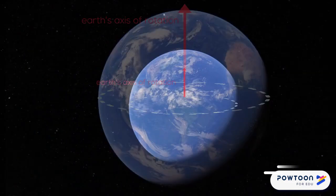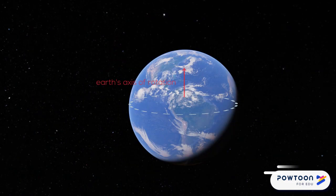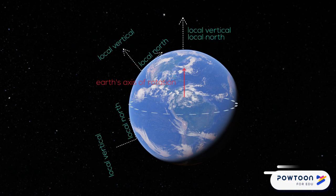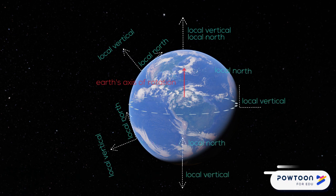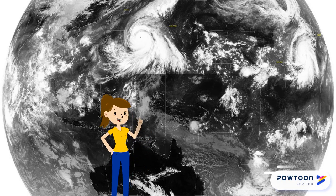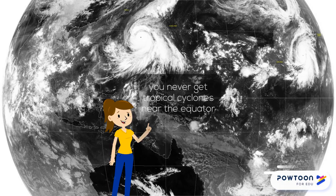To understand the local effect of the earth's rotation, you have to split it into components around the local vertical and the local north. To people standing in different places, north and vertical could mean different directions. At the equator, the component of the earth's rotation about the local vertical is zero. That's why you never get tropical cyclones near the equator.